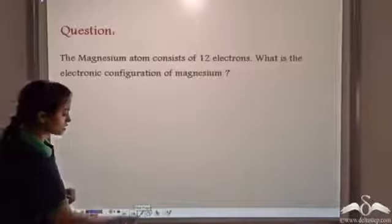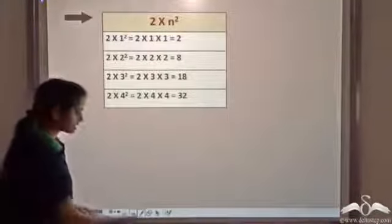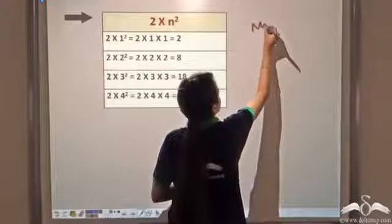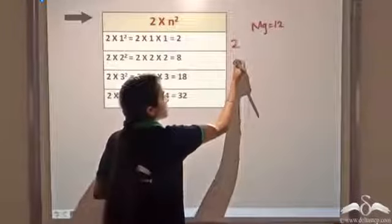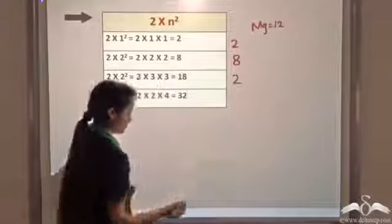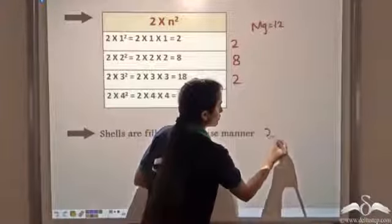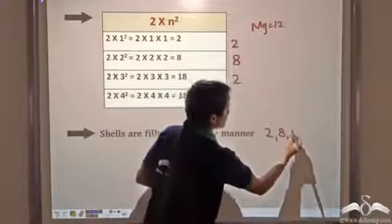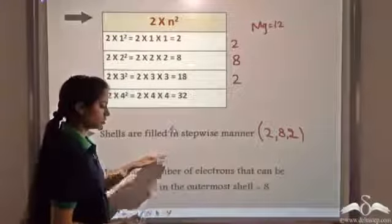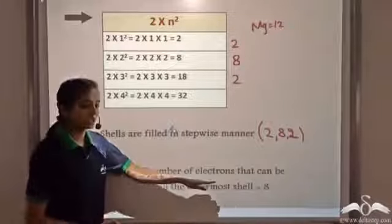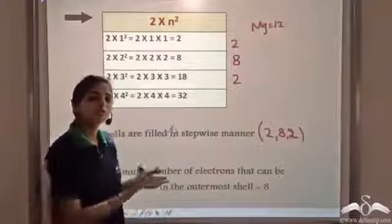The magnesium atom has 12 electrons. By the 2n² rule, the first shell takes 2 electrons, the second shell takes 8, and the remaining 2 electrons go to the last shell. The shells are filled in a stepwise manner: K shell, then L shell, then M shell with 2 electrons. The outermost shell has 2 electrons, so it obeys all three rules. This is the electronic configuration of magnesium: 2, 8, 2. This is the Bohr-Berry scheme for arranging electrons in shells.